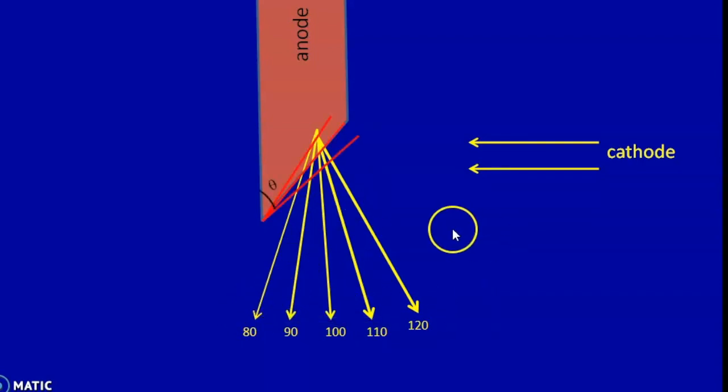Finally, the anode angle also plays an important role in increasing or decreasing the heel effect. When the anode angle decreases, more X-rays are made to traverse through the substance of the anode, through the heel of the anode, thereby increasing the effect. And increasing the anode angle far away from the main substance of the anode reduces the heel effect.